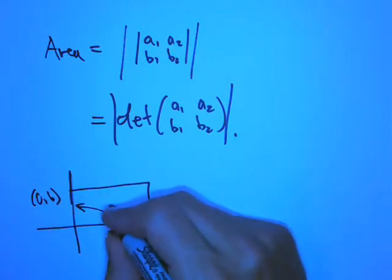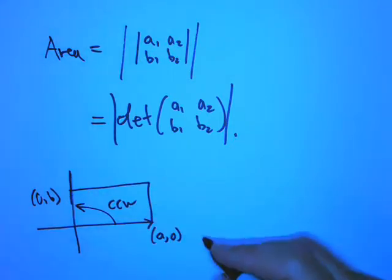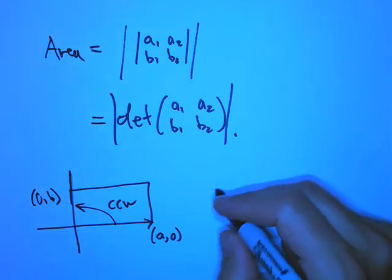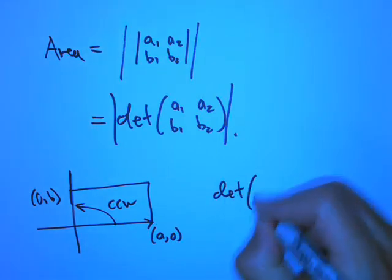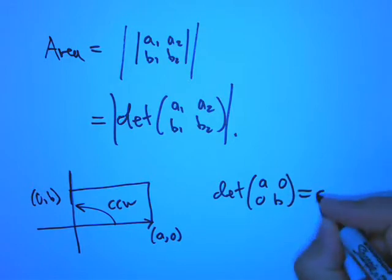And here, the determinant of A, 0, 0, B is AB. That's the area of the rectangle, and it's even positive because it's positively oriented. That's great.